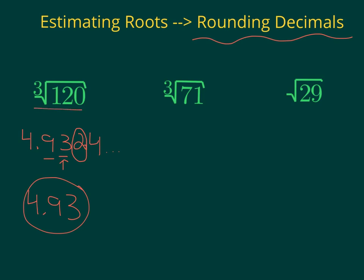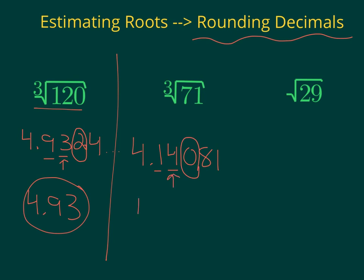Next one, cube root of 71. That works out to 4.14081. Rounding to the nearest hundredth — count to the second decimal place, circle the third. That zero tells you to keep the 4 the same, so it is 4.14.